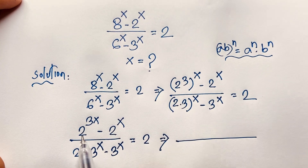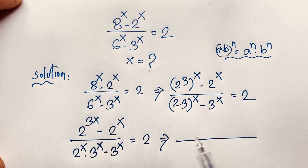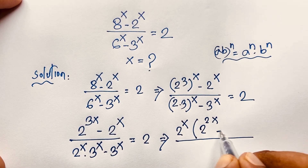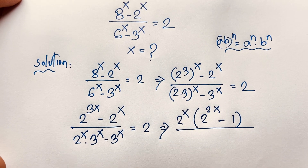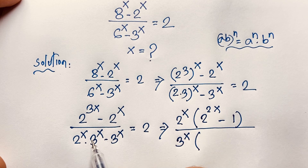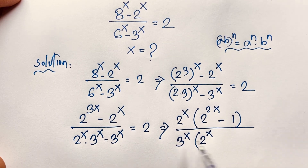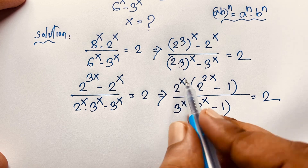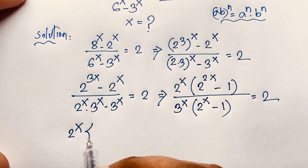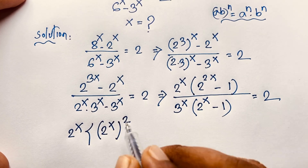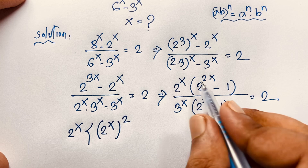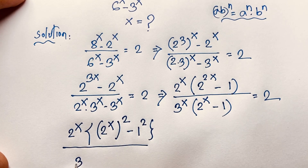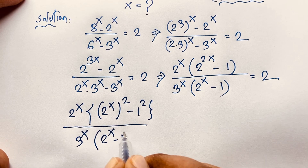You can see here: 2 to the power x — this is 2 to the power x, and this is 2 to the power 3x. So 2 to the power x is common; dividing gives 2 to the power 2x minus 1. And 3 to the power x is common; dividing gives 2 to the power x minus 1, is equal to 2. Now 2 to the power 2x can be written as (2^x)^2.